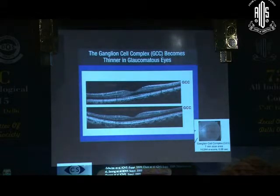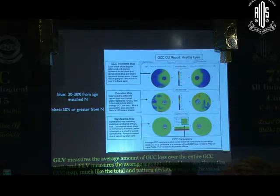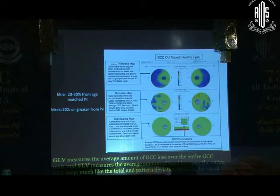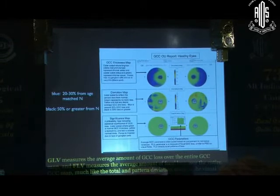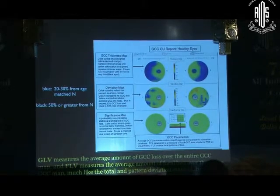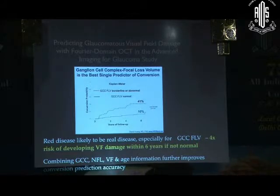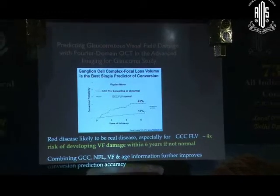The ganglion cell complex is studied at the macula in a 7 square millimeter scan area. For OptiView, it includes the nerve fiber layer, the inner plexiform layer, and the ganglion cell layer, while Cirrus does not include the NFL in its calculations. It is depicted as a thickness map with a ring pattern around the fovea. The deviation map is color-coded blue or black, and the significance map shows the statistical significance of the deviation. The advanced glaucoma imaging study has concluded that the focal loss volume (FLV) is the single best predictor of conversion — an FLV in the red gives a four times greater risk of developing field damage in the next six years.